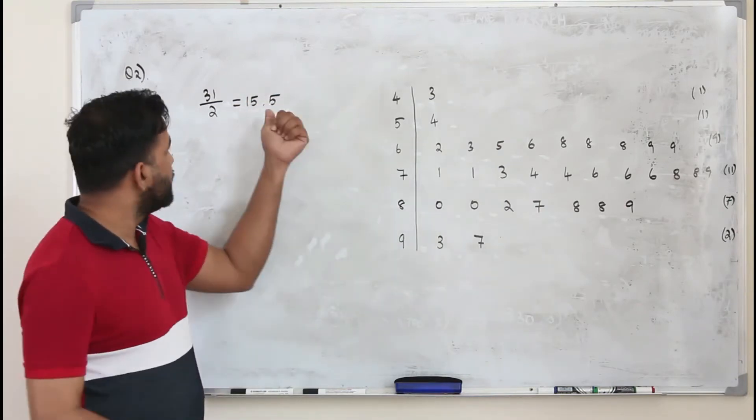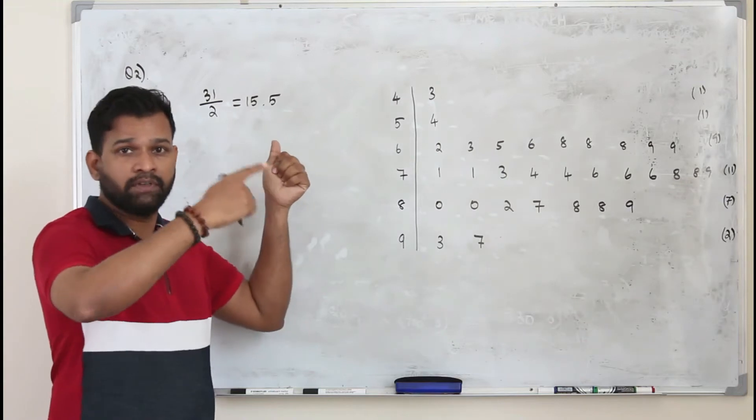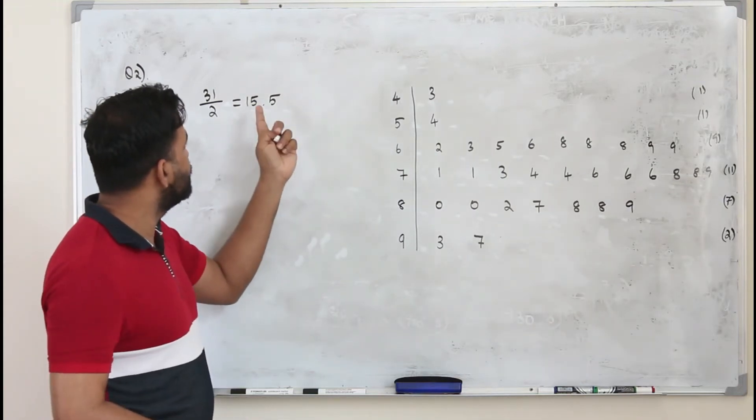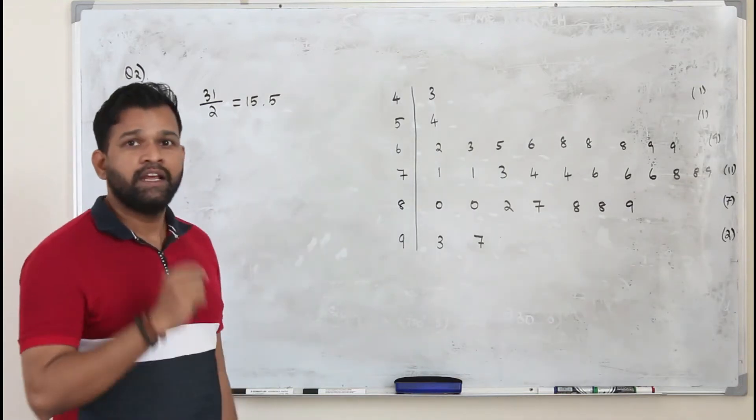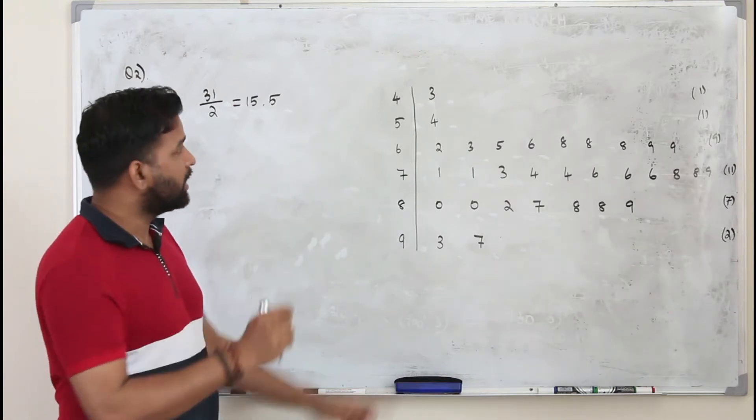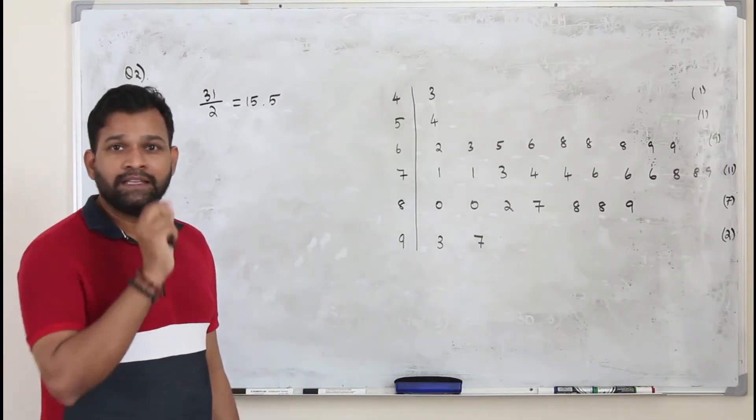So if you get a decimal number, you always round up. When I say round up, the next integer, which is 16. You need to look for the 16th entry from the beginning. That's your median.